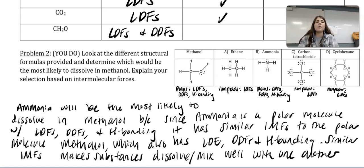In my response I said, ammonia will be most likely to dissolve in methanol because since ammonia is a polar molecule with these three IMFs, it has similar IMFs to the polar molecule methanol which also has LDFs, DDFs, and hydrogen bonding. Having those similar IMFs makes substances dissolve and mix well with one another, unlike those non-polar molecules.